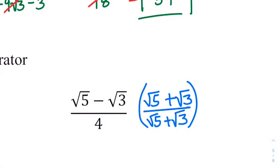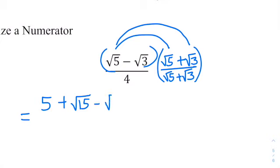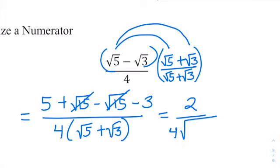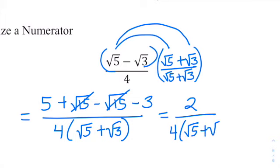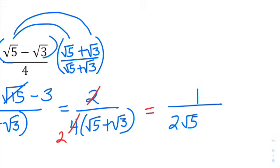There are also instances where we rationalize the numerator. It's the same concept — multiply top and bottom by the conjugate. The conjugate of square root of 5 minus square root of 3 is square root of 5 plus square root of 3. FOILing the numerator as a difference of squares: square root of 5 times square root of 5 is 5, the middle terms square root of 15 cancel, and minus square root of 3 times square root of 3 is minus 3, giving 2 on top. The denominator is 4 times the square root of 5 plus square root of 3. Reducing the 2 and 4, the final answer is 1 over 2 times root 5 plus 2 times root 3.